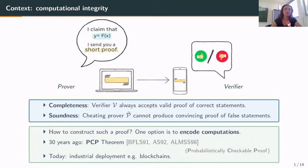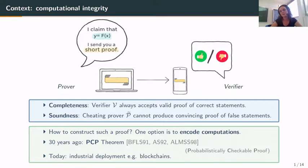But how can we construct such proofs for any computation? One option is to encode the computation, and this has been used 30 years ago for the famous PCP theorem — PCP standing for probabilistically checkable proof. Today it is widely used in industry, for instance in blockchains.